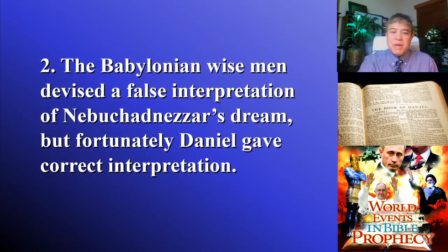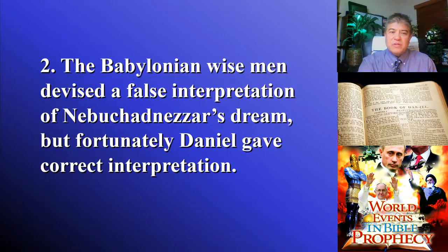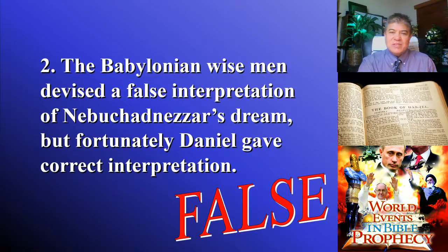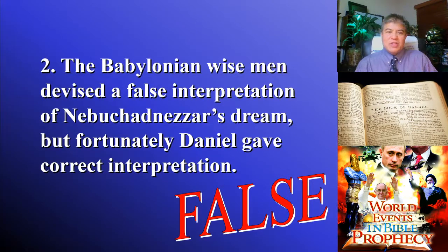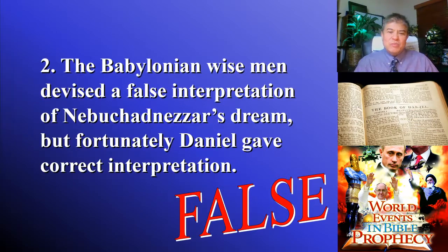Question two is false. The Babylonian wise men had to tell the king what he actually dreamed, but the king had forgotten his dream. The Babylonian wise men couldn't give any interpretation — false or otherwise — because they didn't even know what the dream was. Only Daniel was given that from God.